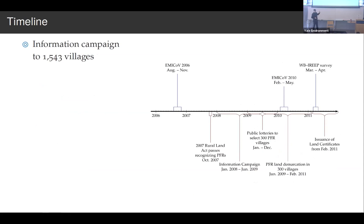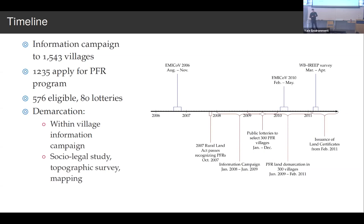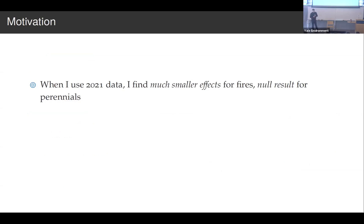Here's what the timeline for the project looked like. There was an information campaign targeting many villages, some of which applied for the PFR program. There are 576 eligible villages and 80 lotteries, and about half were selected. Within each village, there was an information campaign, socio-legal study, topographic survey mapping, and dispute resolution. The result was a map available in the village center generating property rights for people and making boundaries known to everyone. When I use 2021 satellite data to evaluate this, I find a very small effect for the impact of fires used for land clearing and no results on people switching to tree crops.